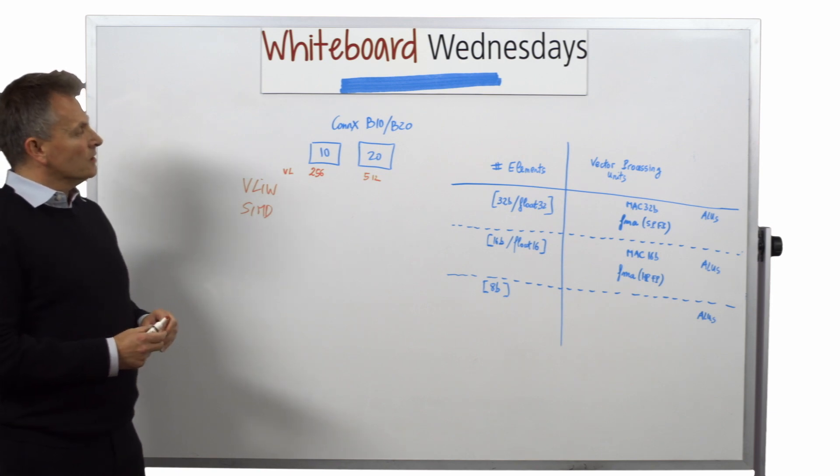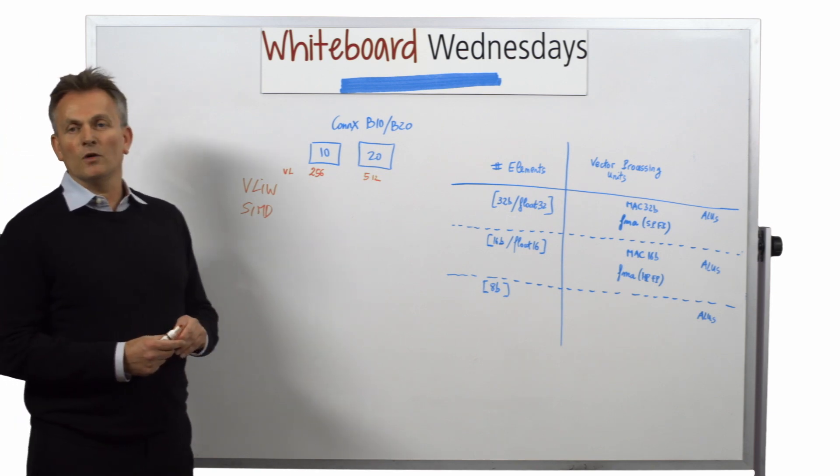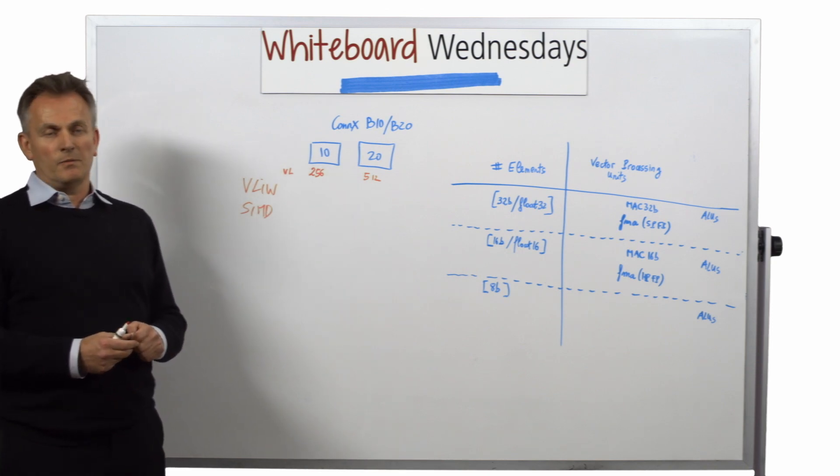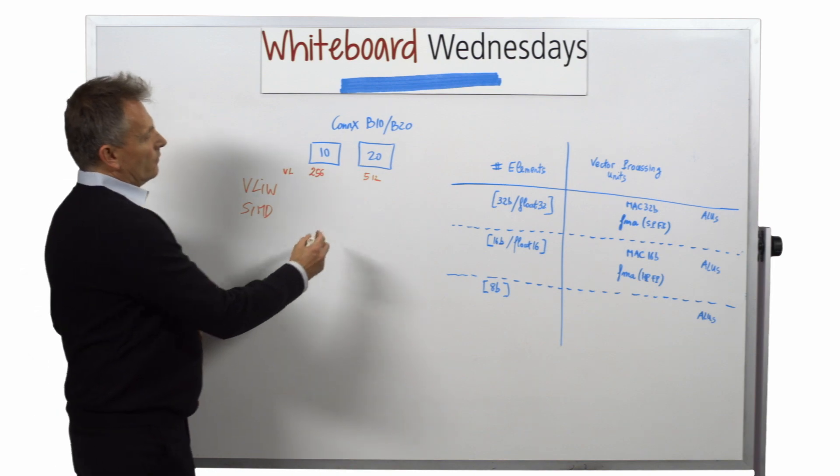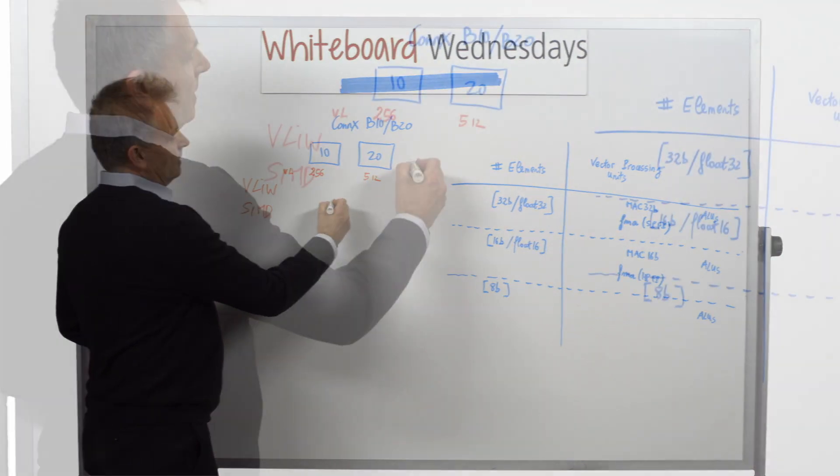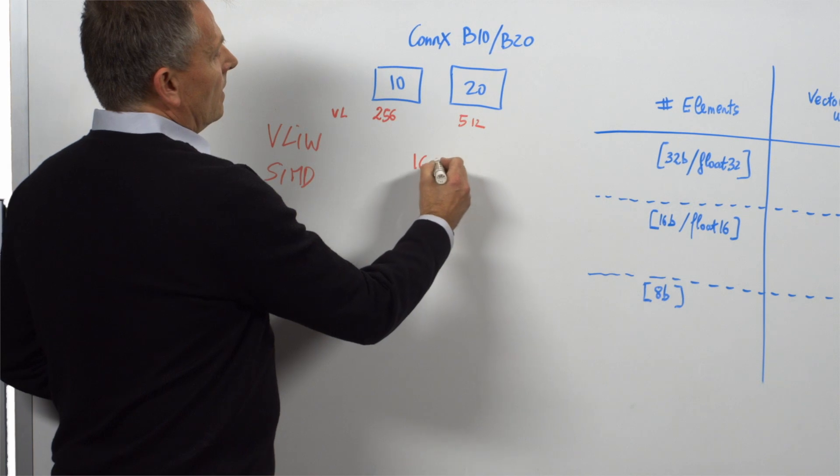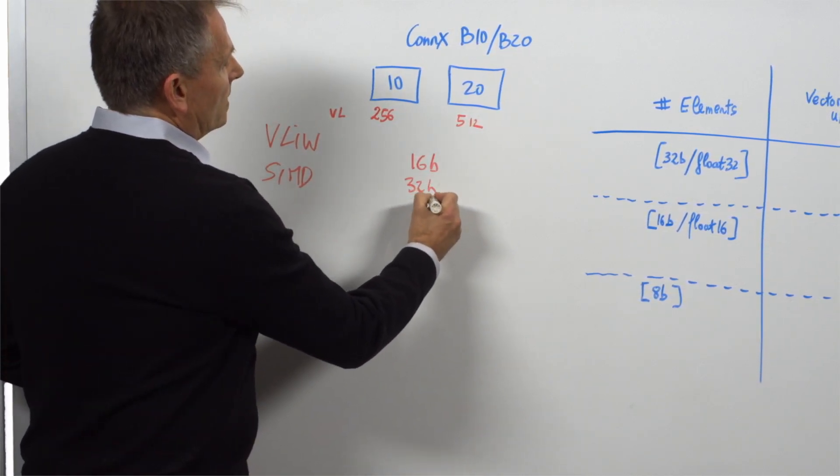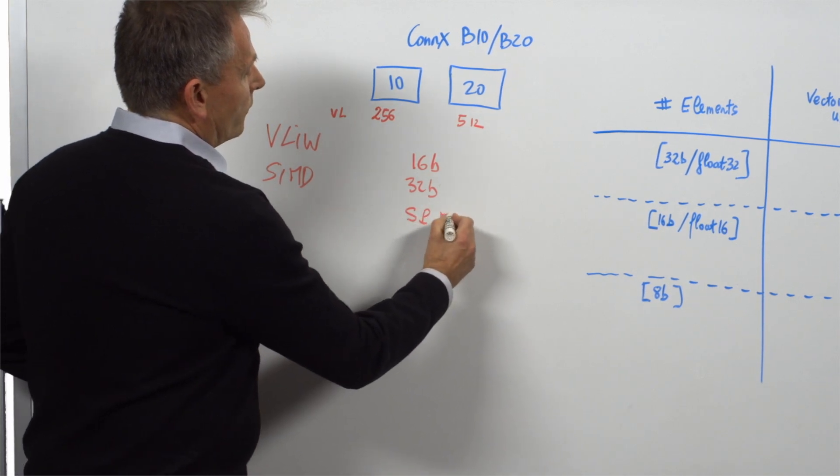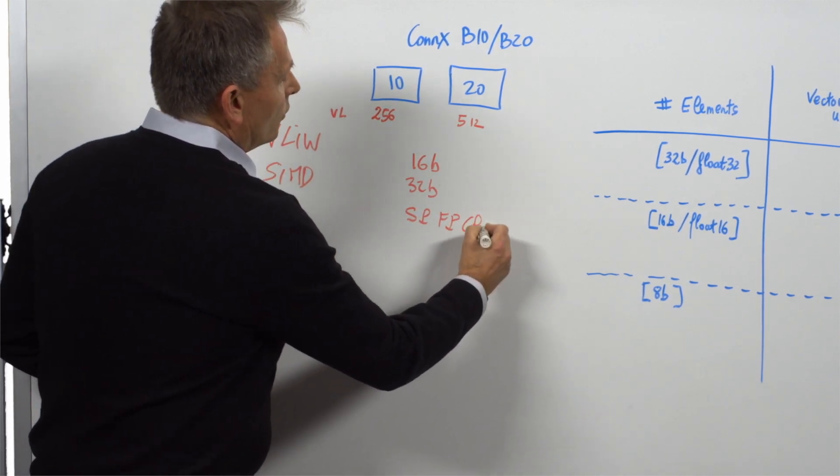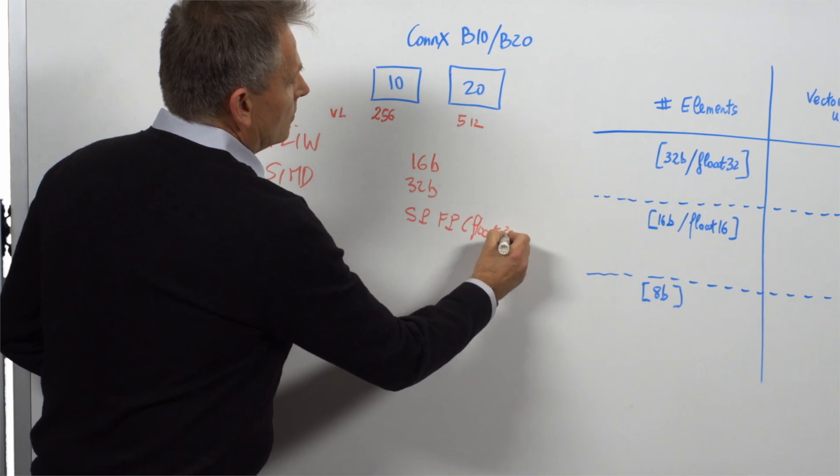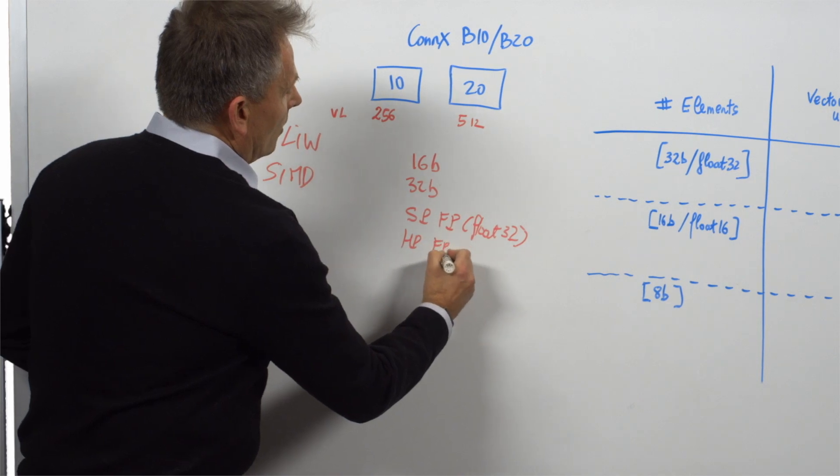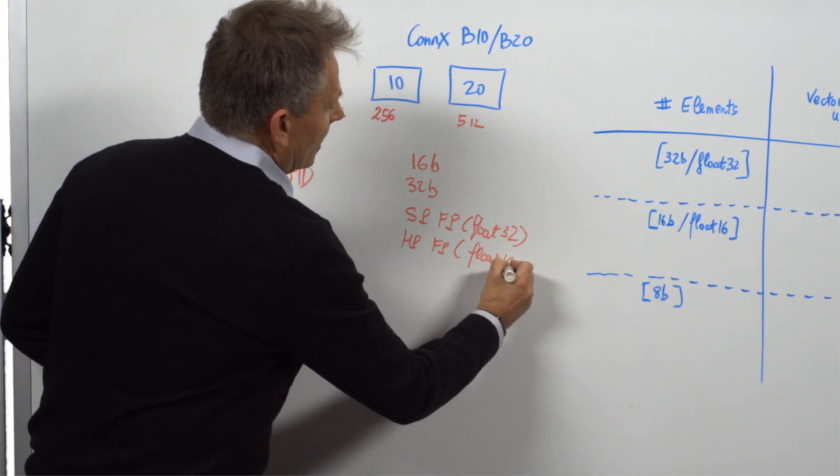What we are going to do here is to show how many elements are actually processed for each SIMD based on the data types. So we talked about the fact that the Connex B10 and B20 is capable of supporting natively complex 16-bit, also complex 32-bit, but as well single precision floating point or float32 and half precision floating point or float16 data types.